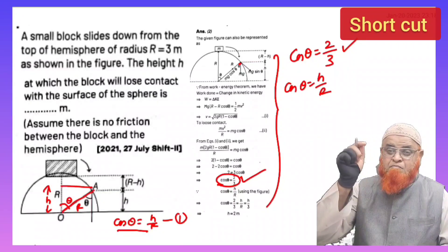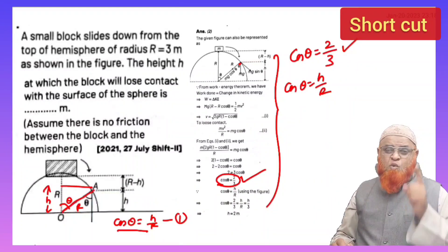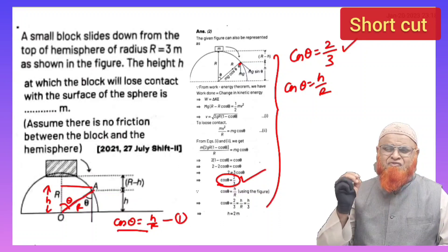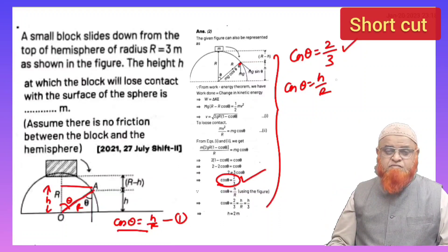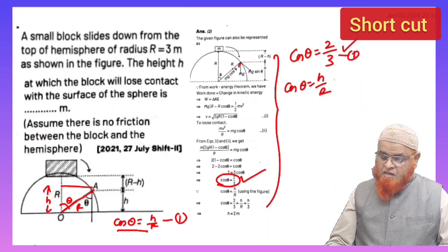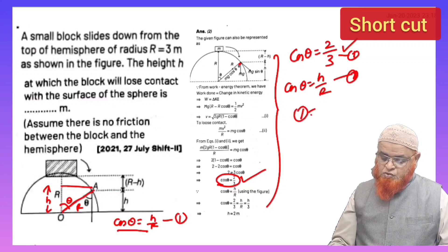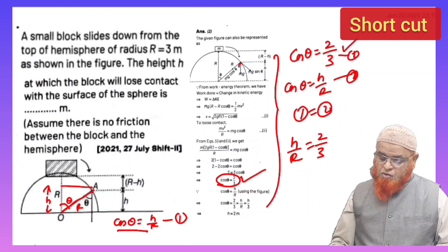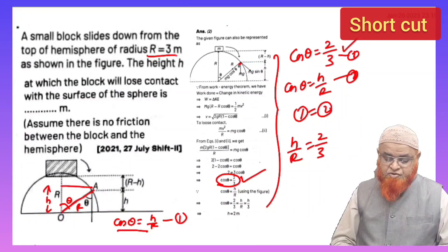Instead of following all these lengthy methods which will waste a lot of your time, by seeing this problem you can say that in mains it is going to eat away one or two minutes, definitely, even though you are expert. But how can you solve this one so easy? In fraction of seconds you can just make them equal - this is equation number 1, this is equation number 2. So 1 is going to be equal to 2.